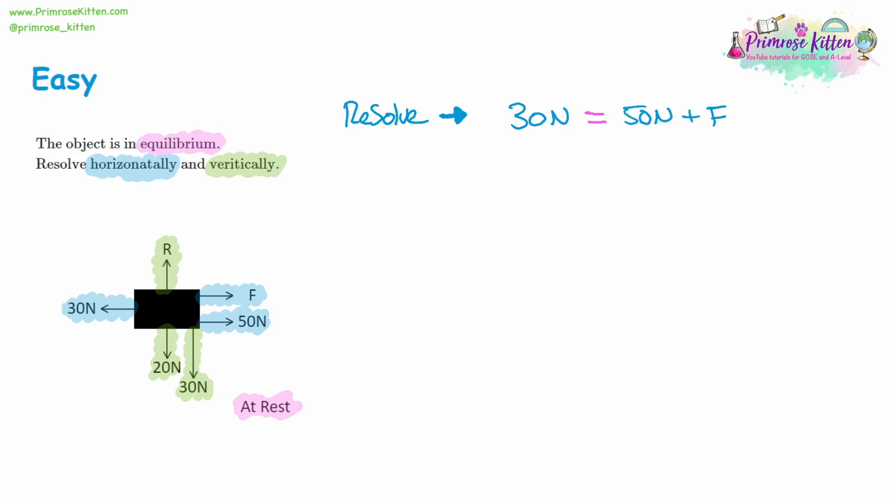When resolving, we move everything over to the positive side — to the right-hand side. We've got F on the right-hand side and 50 on the right-hand side. Just like solving an equation, we take 30 newtons away from both sides to move it over to the right. So we're taking away 30 newtons and then setting it equal to zero. The 50 newtons is still positive, F is still positive, and I've moved the 30 newtons over. I haven't added the 50 and 30 together because resolving shows all the individual forces.